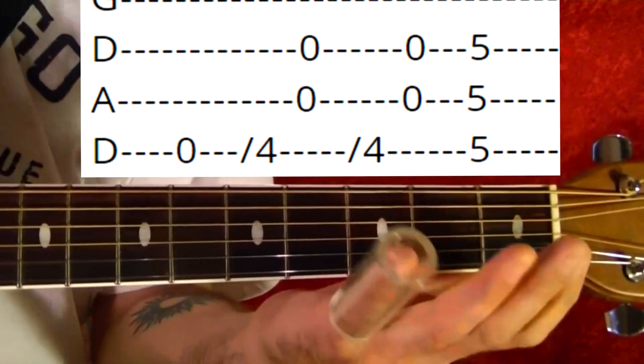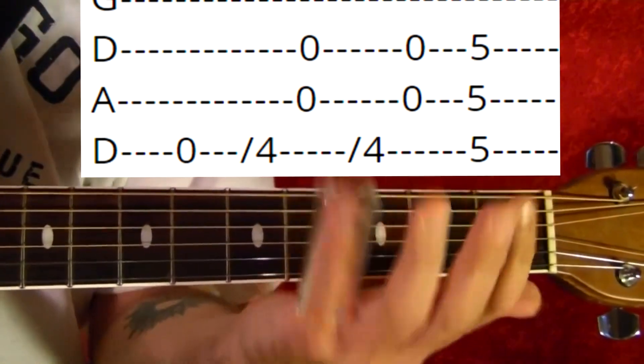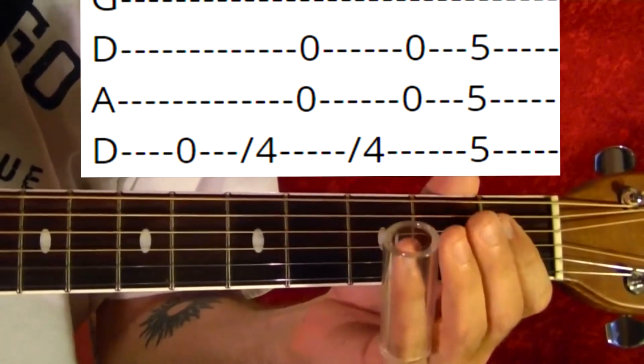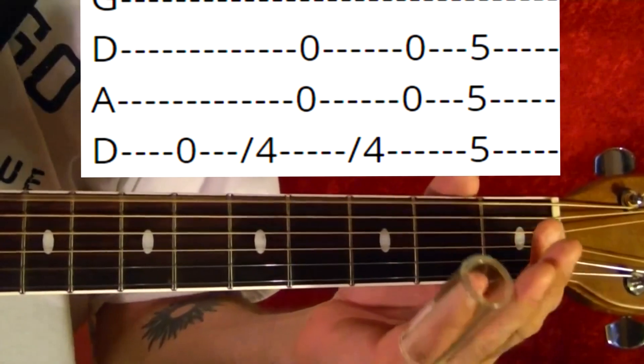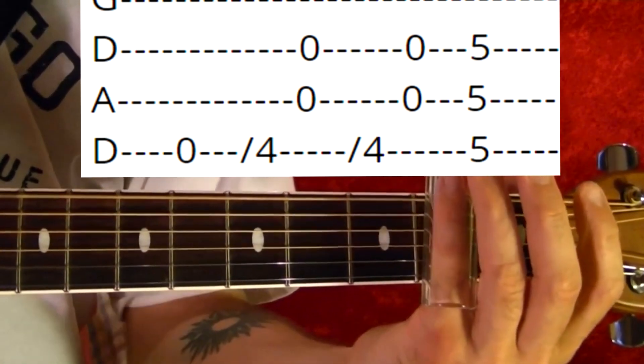So it's the top string open, and you're going to need a slide for your pinky, unless you want to play it without—it doesn't sound the same. Okay, so top string open, top string slide up to the fourth fret.